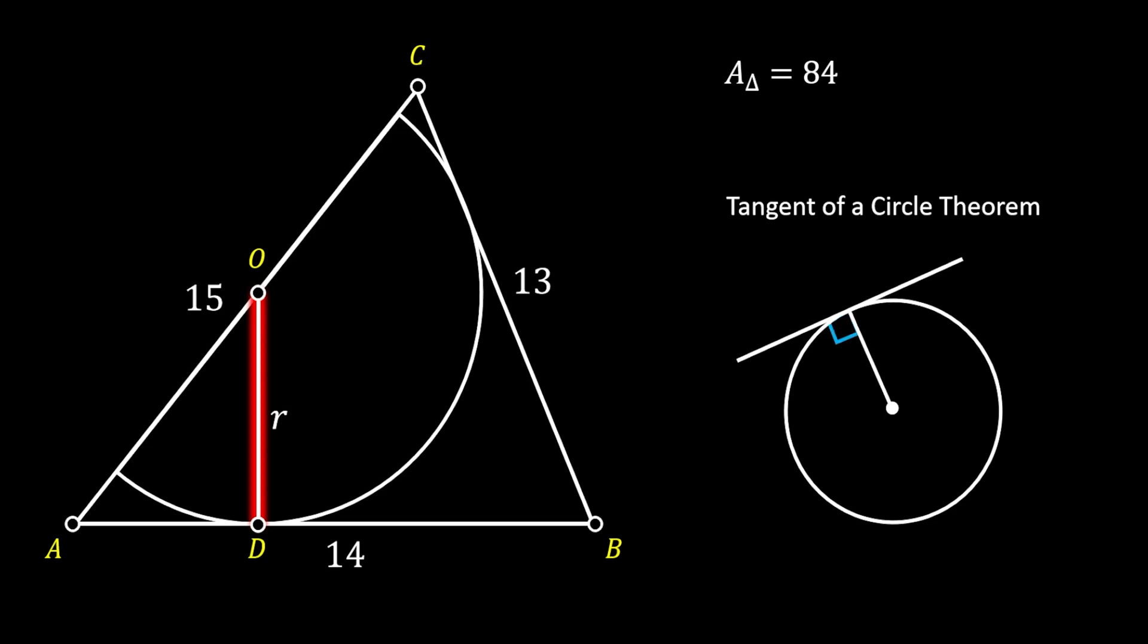We can use this in our case here, since OD represents the radius of our half circle and the line AB represents the tangent to this circle. That means that the angle at the point D must be the right angle.